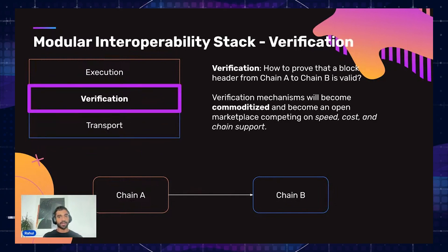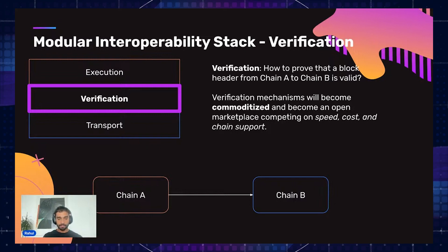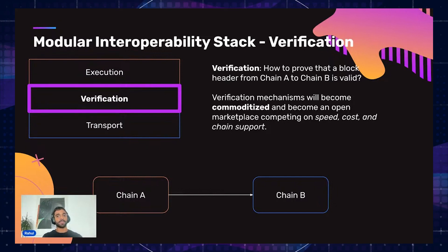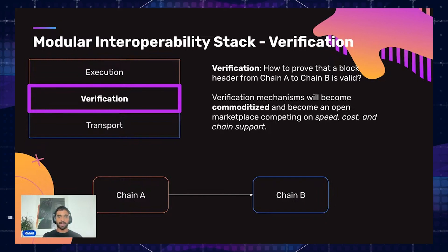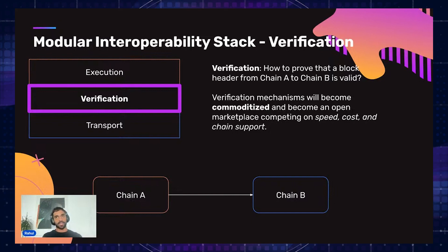Moving on to the verification layer: how do you prove that something — like a block header — is valid from chain A to chain B? The bottom line here is that verification mechanisms are going to be commoditized and become an open marketplace where different actors can compete on speed, cost, and chain support. Since you're essentially just sending block headers — a fixed piece of data — the cost doesn't scale with the amount of data you're sending, so it's really going to be a race to the bottom.